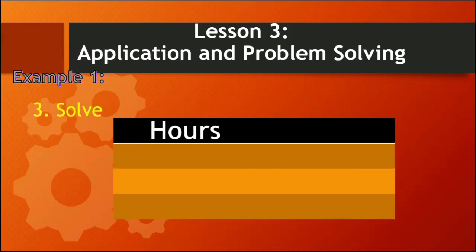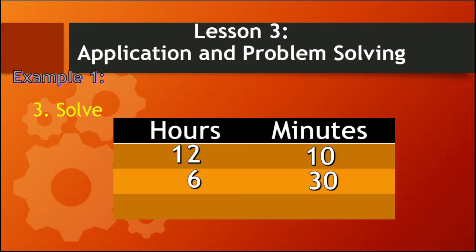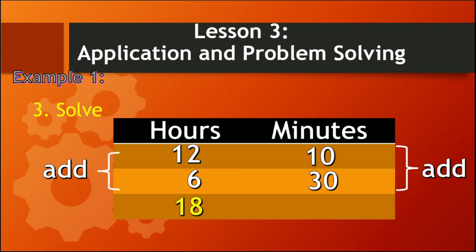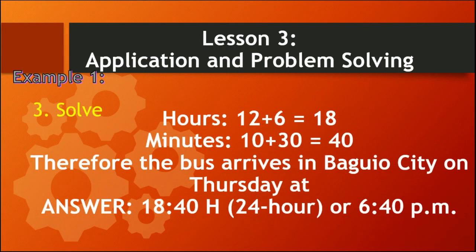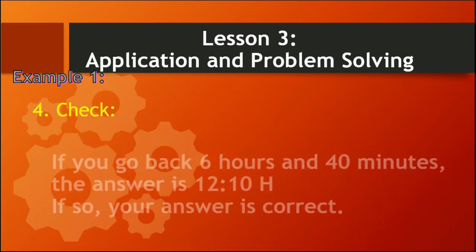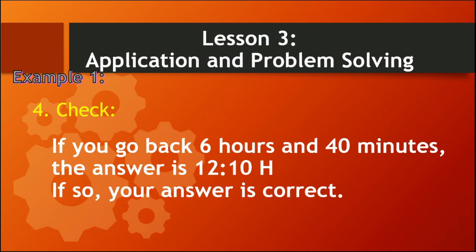Solve: Make a table in hours and minutes. 12 hours and 10 minutes, plus 6 hours and 30 minutes. Add 12 and 6 to get 18 hours, then add 10 and 30 to get 40 minutes. So the total is 18 hours and 40 minutes. Therefore, the bus arrives in Baguio City on Thursday at 1840 hours, or 6:40 PM. To check: going back 6 hours and 30 minutes from 1840 gives 1210 hours, confirming the answer is correct.